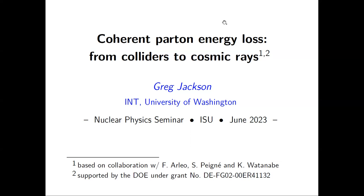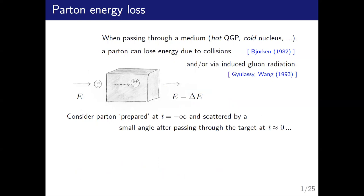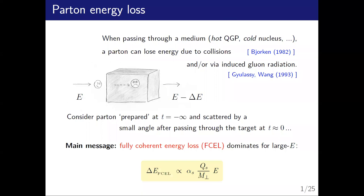Conceptually, this problem is really simple. You have some block of matter — it doesn't really matter what the matter is — but you have a parton that moves through it, say a quark or a gluon. Because of the presence of the medium and its interactions, this parton can somehow lose energy over some length. The main message is that if you have a parton that initially comes through this medium and then exits with some reduced energy, the dominant regime of energy loss is something called fully coherent energy loss — FCL. It dominates at very large energies because the average energy loss turns out to be proportional to the energy.